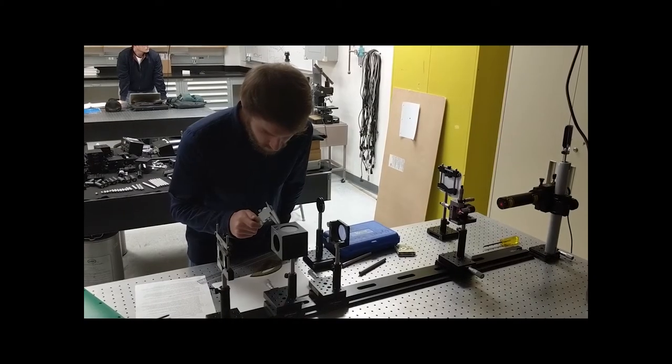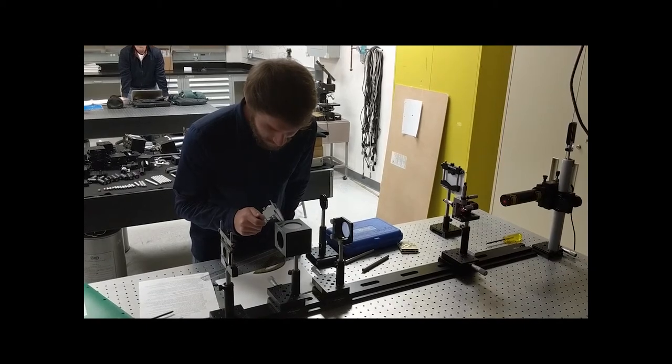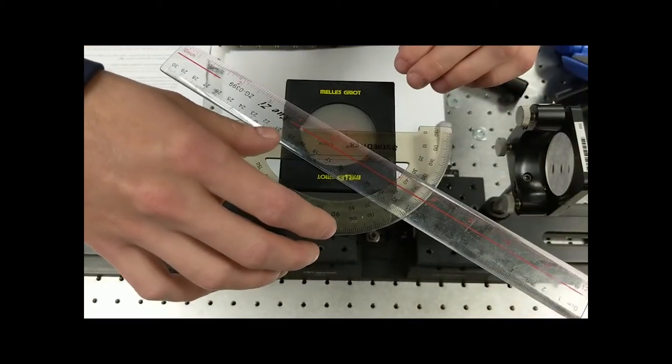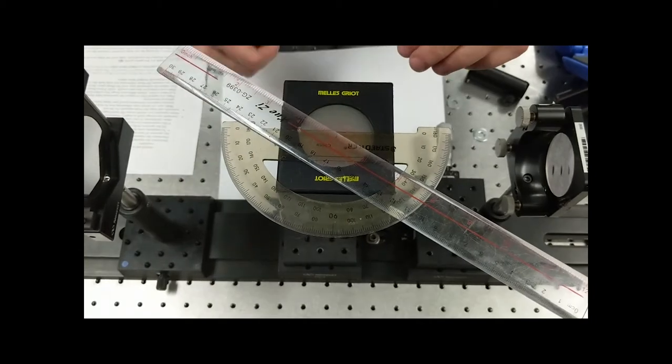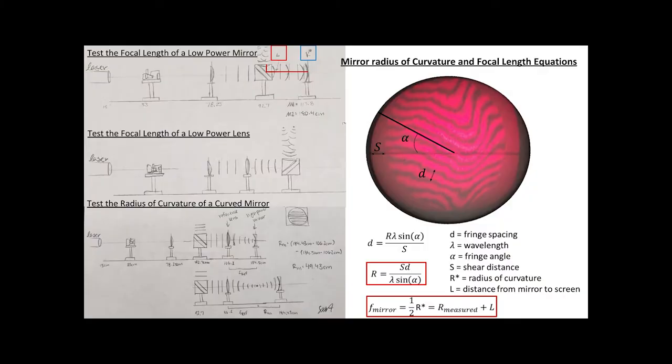When we use the shear plate, we measure the shear distance, the spacing of the fringes, and the angle of the fringes with respect to the reference line on the viewing screen. From these three parameters, we can calculate the radius of curvature of the wavefront at the viewing plane according to the equation on this slide. Here we present sketches of the three experimental layouts used. Generally speaking, the shear plate allows us to measure the radius of curvature of optical wavefronts, allowing us to determine the radii and respective powers of our optics.